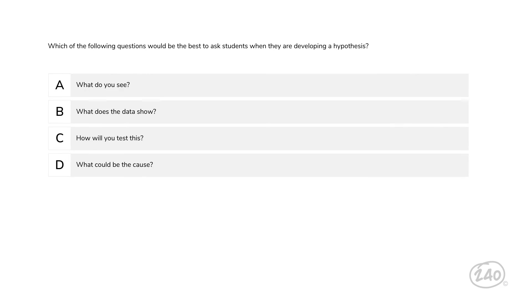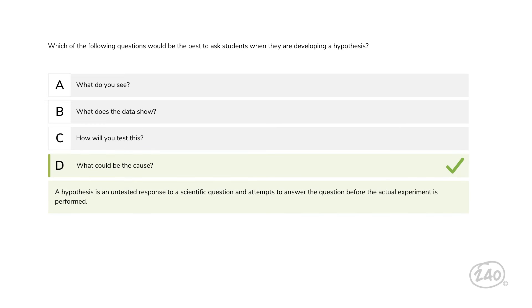Which of the following questions would be the best to ask students when they're developing a hypothesis? Options: 'What do you see?', 'What does the data show?', 'How will you test this?', or 'What could be the cause?' A hypothesis attempts to answer the question before the actual experiment is performed, so 'What could be the cause?' is the best answer.